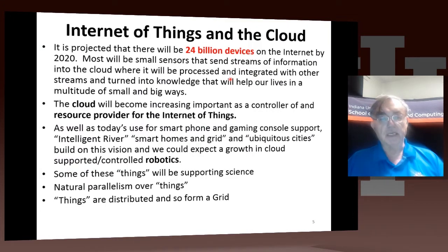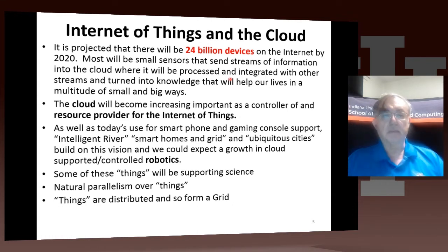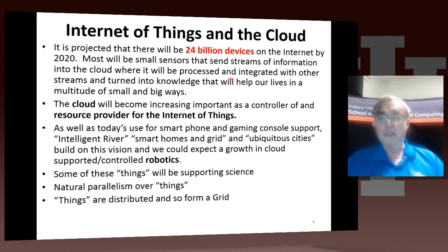First, let's discuss the Internet of Things, which is really what I mean by sensors. There is an estimate — and I point out there are many different estimates from different websites — but one estimate is 24 billion devices on the Internet by 2020, and most of these will be small sensors sending streams of information sporadically into the cloud.